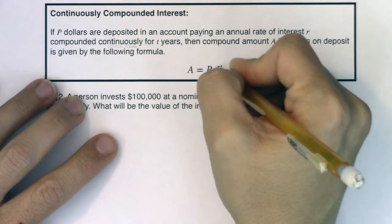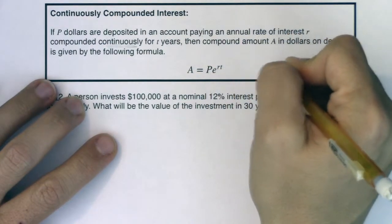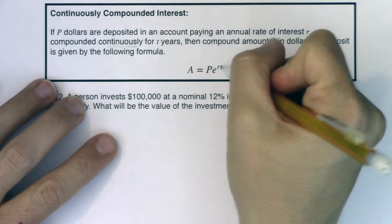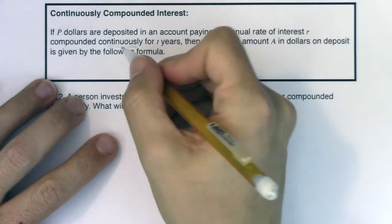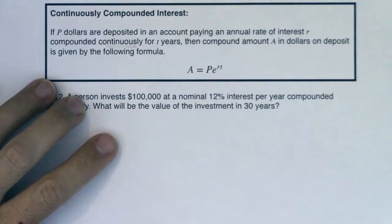You can see that the base of our exponent became a little bit nicer. It's not that 1 plus r over n to the nt. It's just this e. And instead of nt, we have r times t up here. So when things are compounded continuously, our base turns into e.